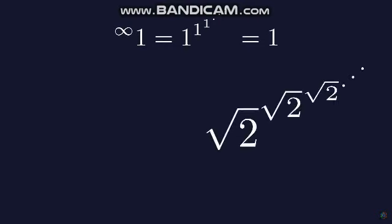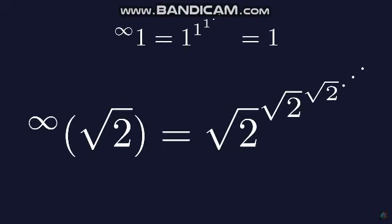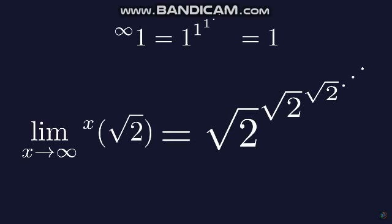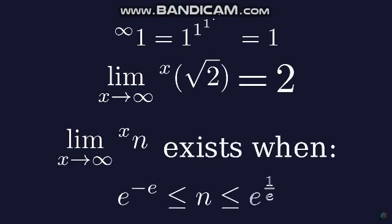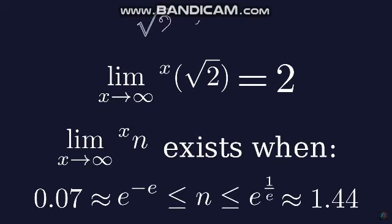But now consider an infinite power tower of square roots of 2. We can write it as the square root of 2, tetration to infinity. The accurate way to express tetration to infinity is using a limit as x approaches infinity of the square root of 2, tetration to x. Surprisingly, this infinite power converges to 2. The limit exists when the base of a number is between e to the power of minus e and e to the power of 1 over e, which is an interval from around 0.07 to 1.44. The square root of 2 falls within this range.